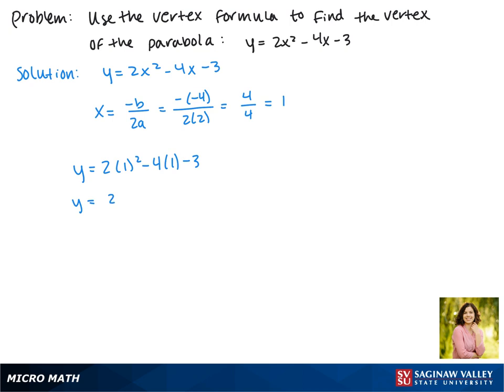This gives us 2 - 4 - 3. 2 - 4 is -2, and -2 - 3 is -5. This makes our vertex of the parabola the point (1, -5).